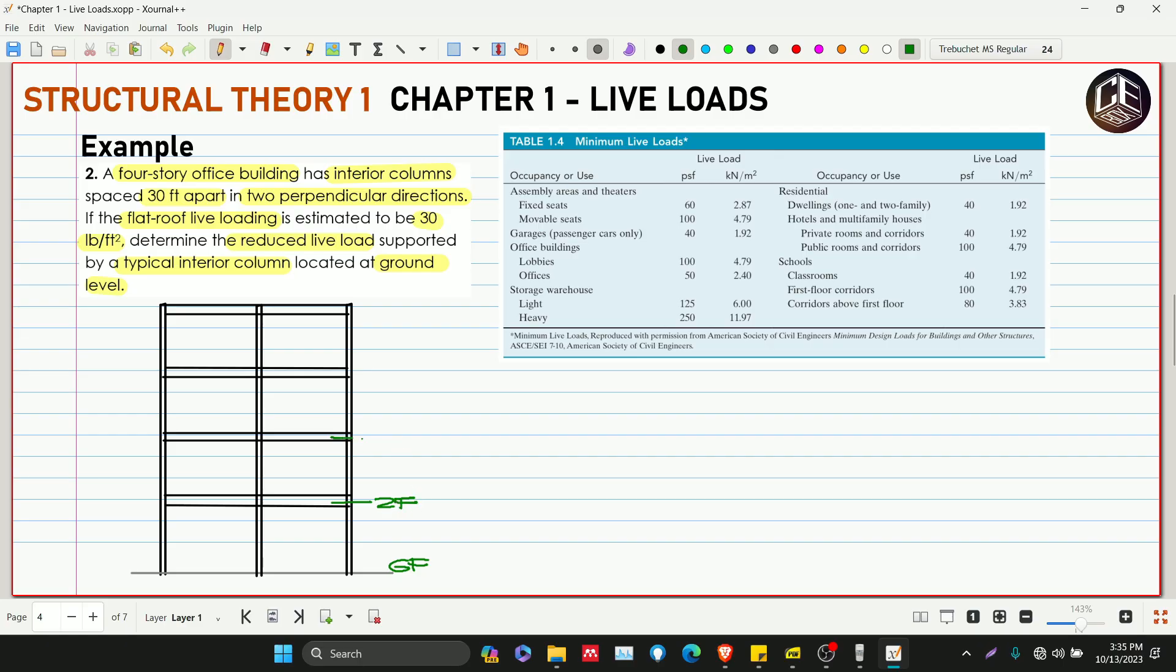The importance of these live loadings is to imagine the building. Let's label them: ground floor, second floor, third floor, then fourth floor and the roof. Usually when the client is Chinese, there's no third floor—it's considered unlucky in their superstitions. But anyway, we have a four-story building, and from ground floor to fourth floor, the occupancy type is office.